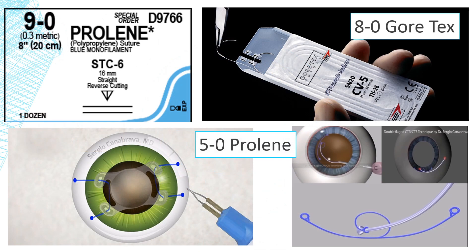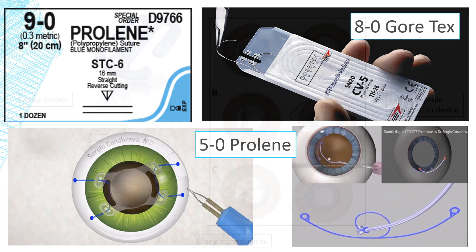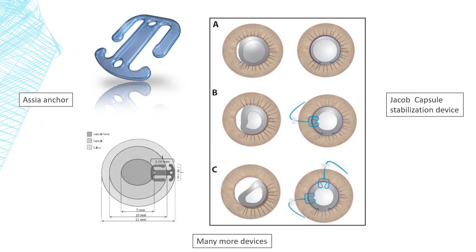To fix the CT segment or Sioni ring to the sclera, I generally use 9-0 prolene, but there are other methods like using 8-0 Gore-Tex suture also known as PTFE, and also we can use 5-0 prolene which Dr. Kanabrava has shown — using the double flange technique to fix the CT segment or Sioni ring to the sclera. Whatever method you follow, I recommend that you keep doing the same method again and again until you master it, and then you can try other methods.